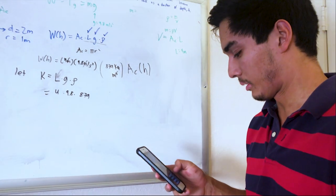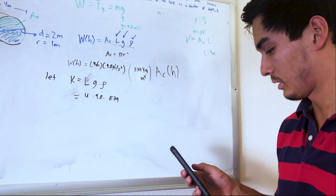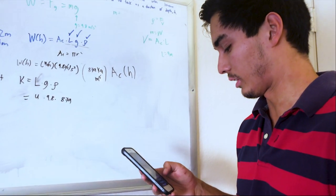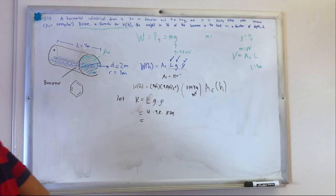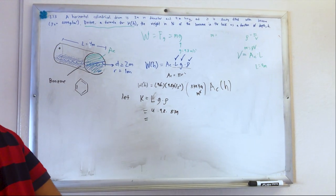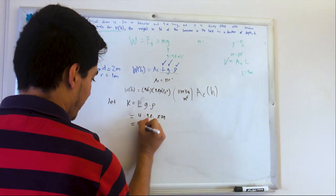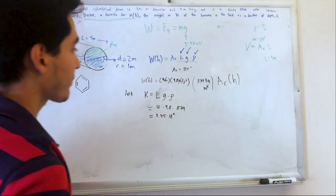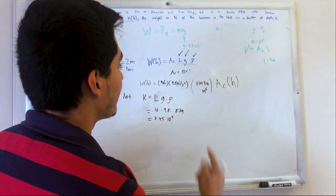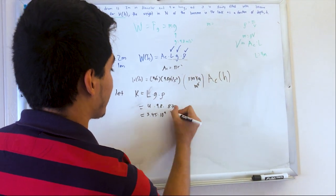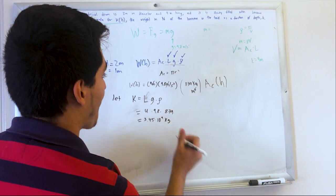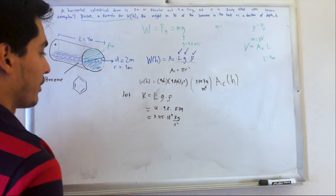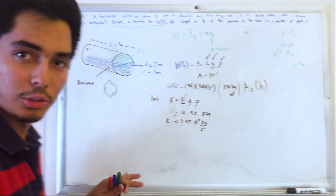Alright, so 4 times 9.8, 9.8 times 879. What is that? 3, 3, 4, 4, 5, 6. So it's gonna be 3.45 times 10 to the 4th power. And these are in, what are you gonna say? These kilograms per second squared. Alright? So this is gonna be some little constant.